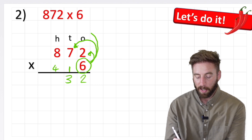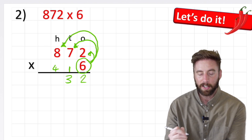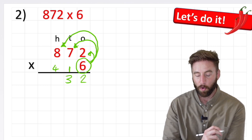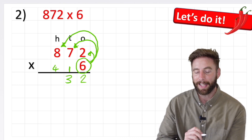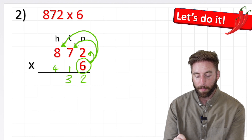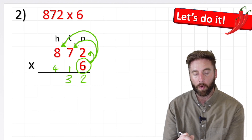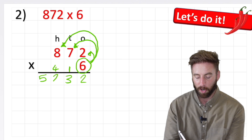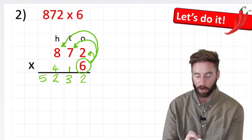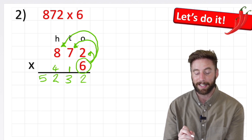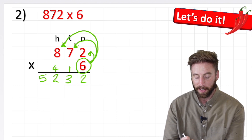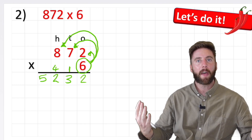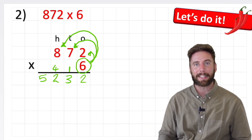Last question: 6 times 8. And 6 times 8 is 48, plus the 4 is 52. Now remember, we have nothing to work out in my thousands column, so I can just put my 5 into the thousands column and my 2 into the hundreds column. And the answer to 872 times 6 is 5,232. And there we go — it is as simple as that.